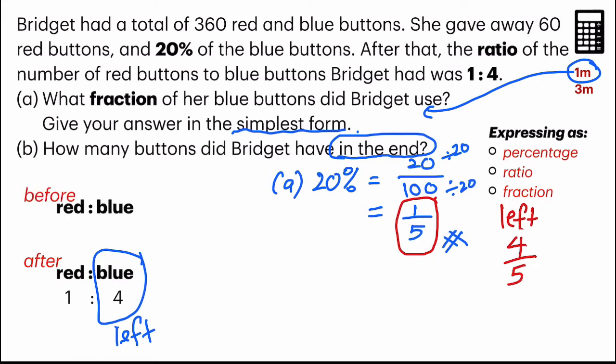So which means I can express my units for blue buttons as 5. Can you see what I've done here? I just added 4 with the 1 unit here to get 5.